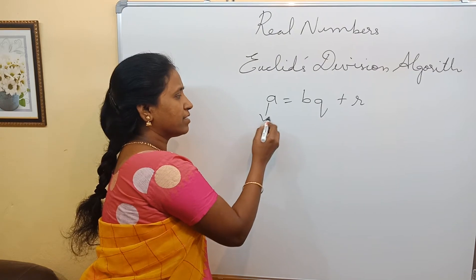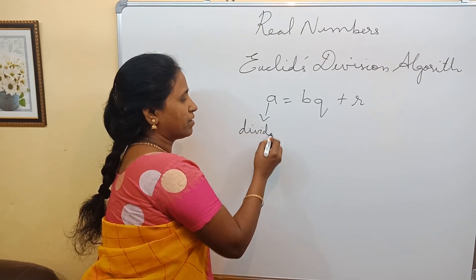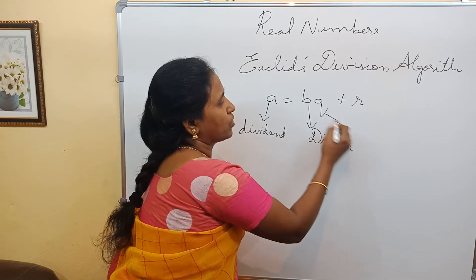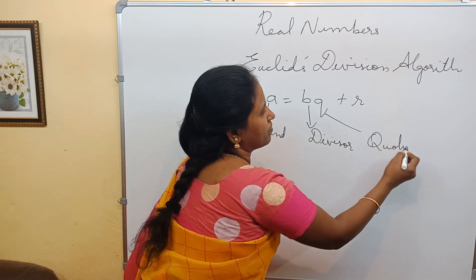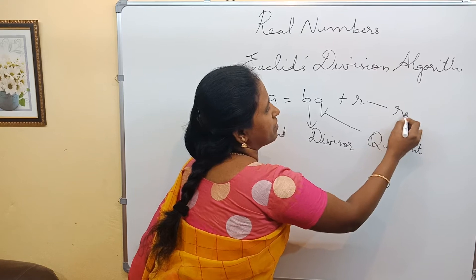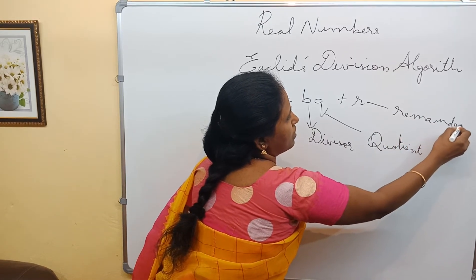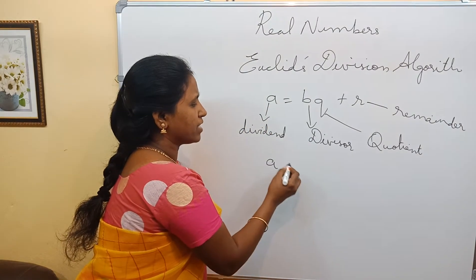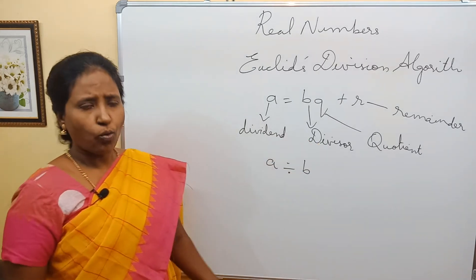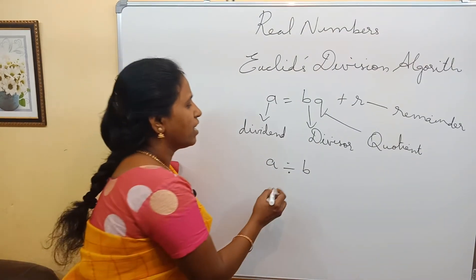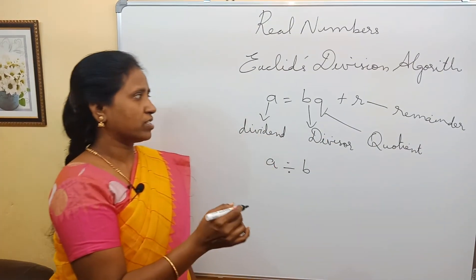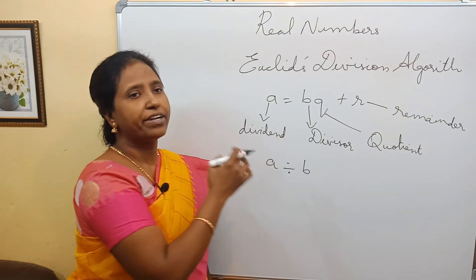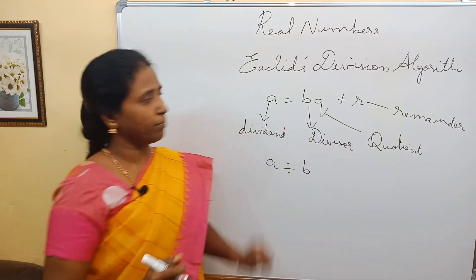A is the dividend, B is the divisor, Q is the quotient, and R is the remainder. This says that any number, when A is divided by B, the resultant is the quotient. A is nothing but the product of B and Q, dividend and quotient, and the sum of the remainder.